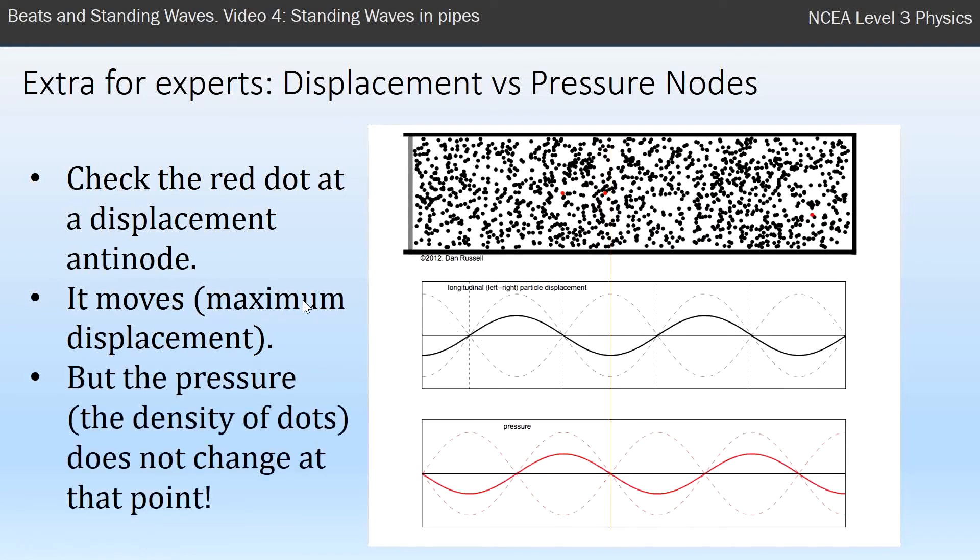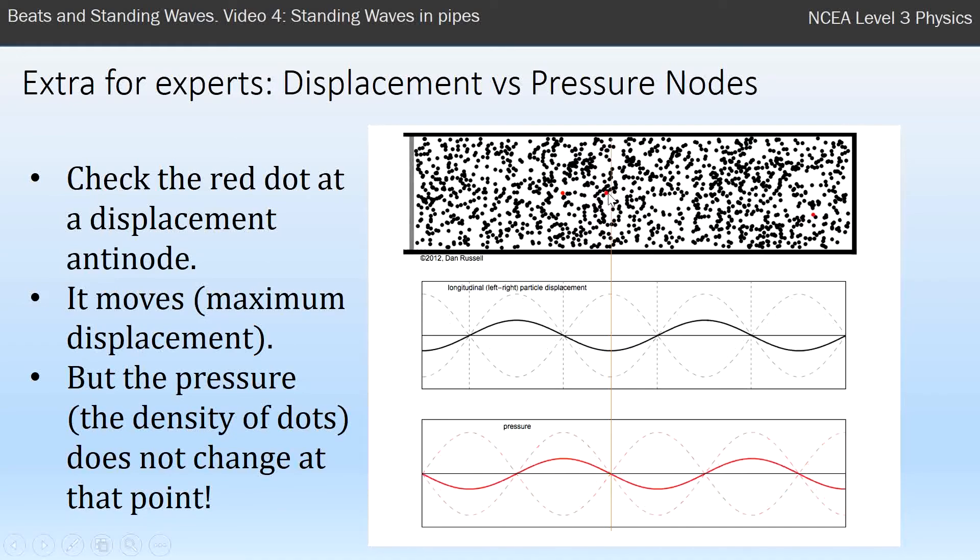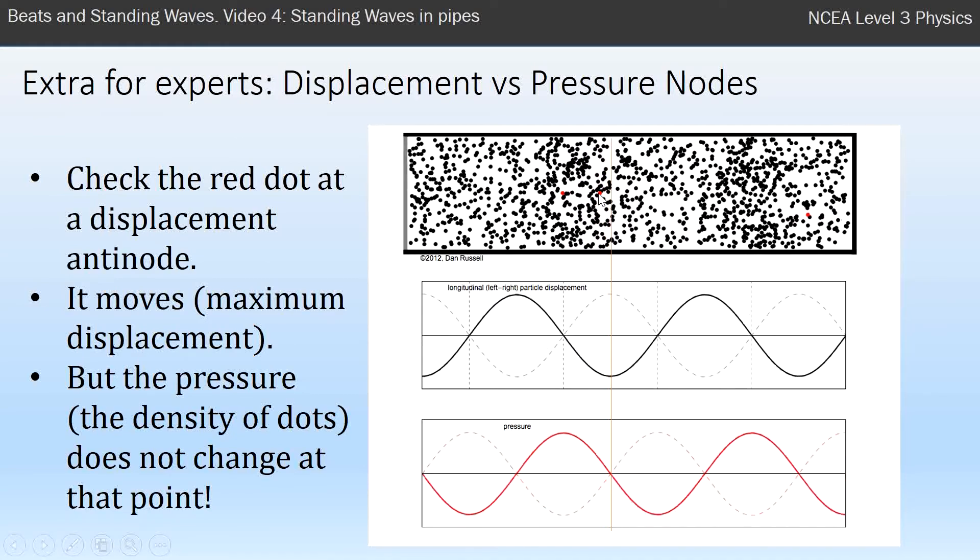But the pressure at that point does not change. You just follow this red dot and look at the dots around it. How many dots around it stays the same the whole time, even though they're all moving together?